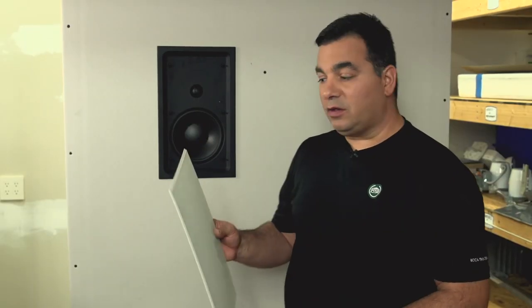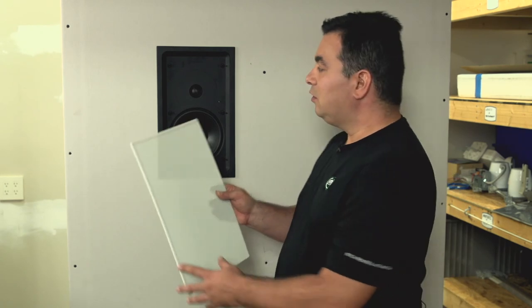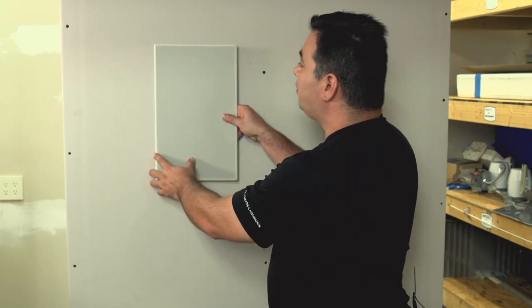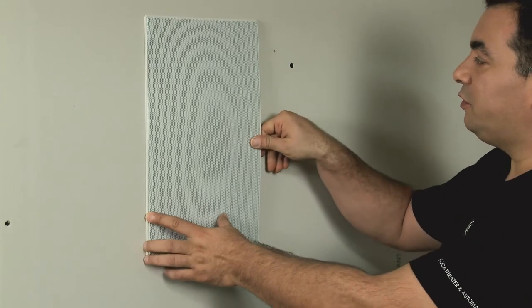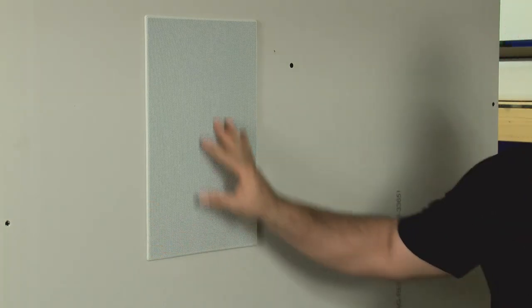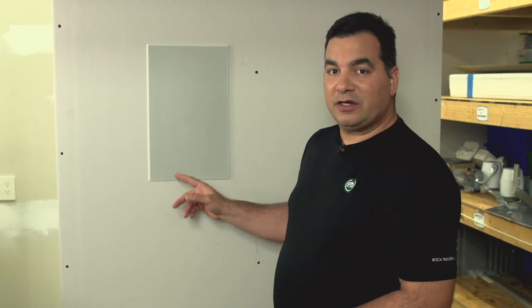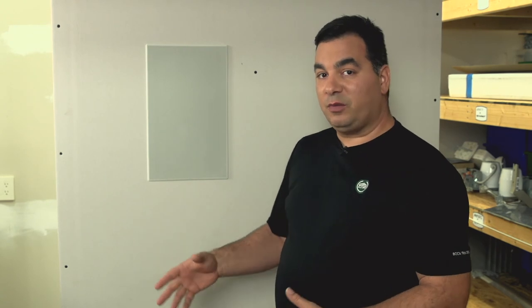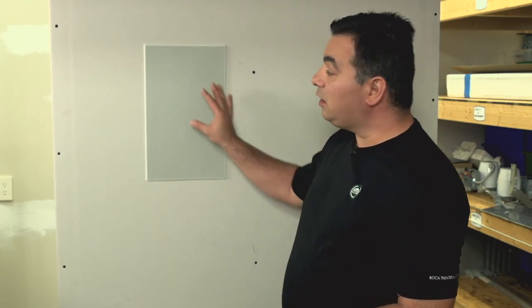Now we're ready for the magnetic speaker grill. We'll just go ahead and put this over our corners. And you'll see that this fits flush to the wall. The nice thing about this speaker grill is that it comes in white, so it can be custom painted to match our client's wall and any patterns that they might want to put on there. And you're ready to enjoy your Dynaudio speaker.